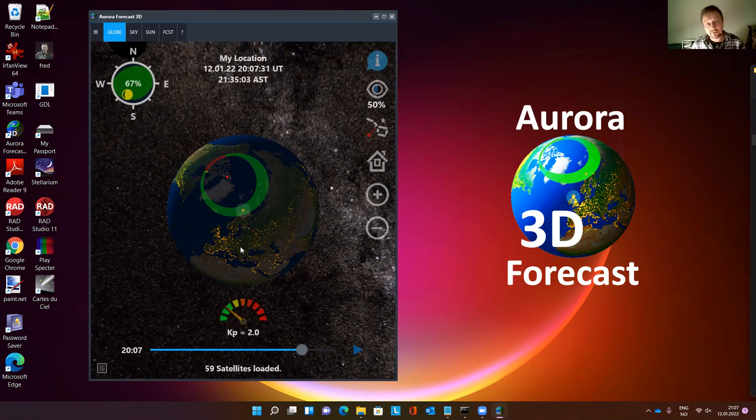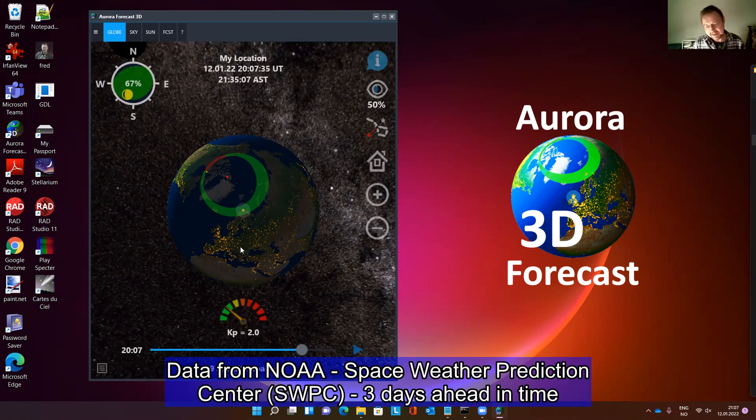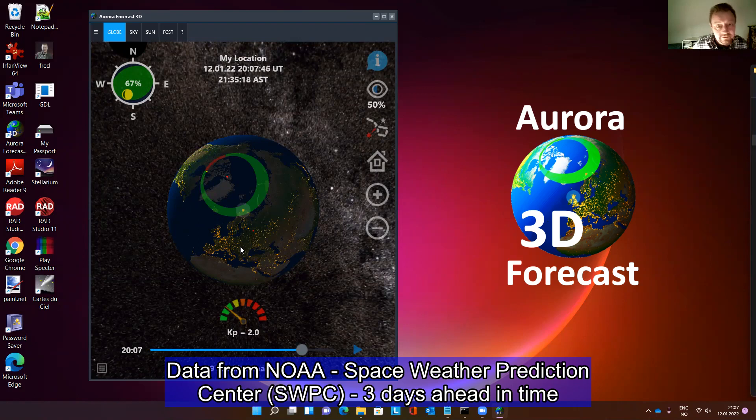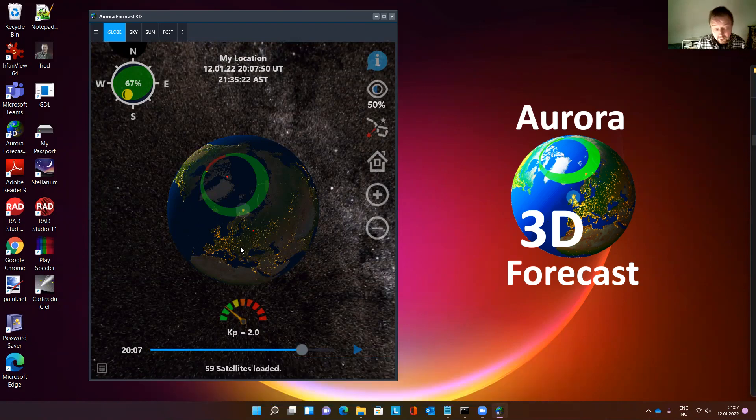You are free to download it if you want to. The app is based on the Space Weather Prediction Center that gives us the Kp index three days ahead in time. So please use this app to locate where the aurora is, where you are located.